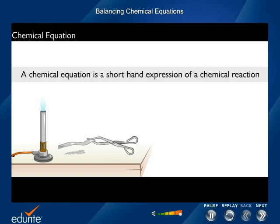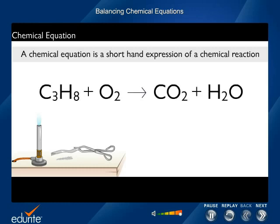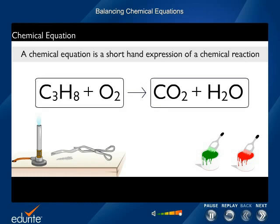A chemical equation is a shorthand expression of a chemical reaction. Here is a chemical equation representing the combustion of propane to give carbon dioxide and water. Color the reactant side red and the product side green. Drag and drop the required color in the respective circles.